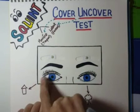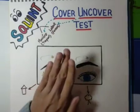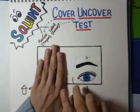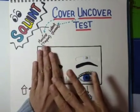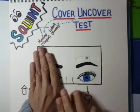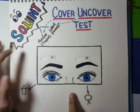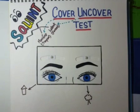It was exophoria because the eye was deviated outwards. When we cover it, the vision is occluded and the eye moves because it has a latent squint. When we uncover it, the eye moves back to maintain focus. Hope it was easy. Thank you.